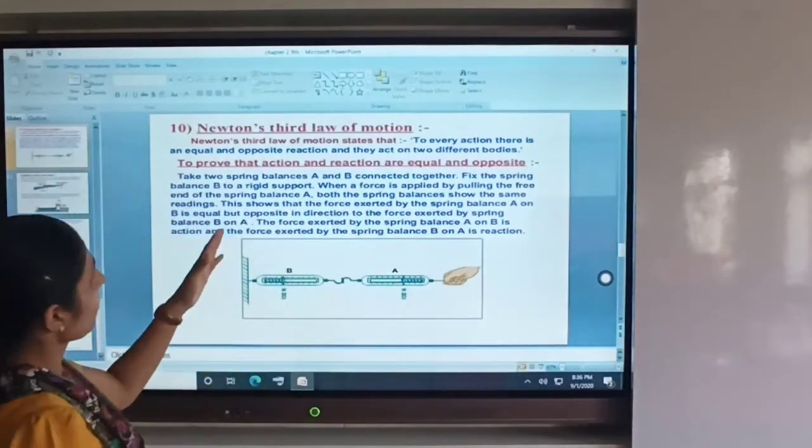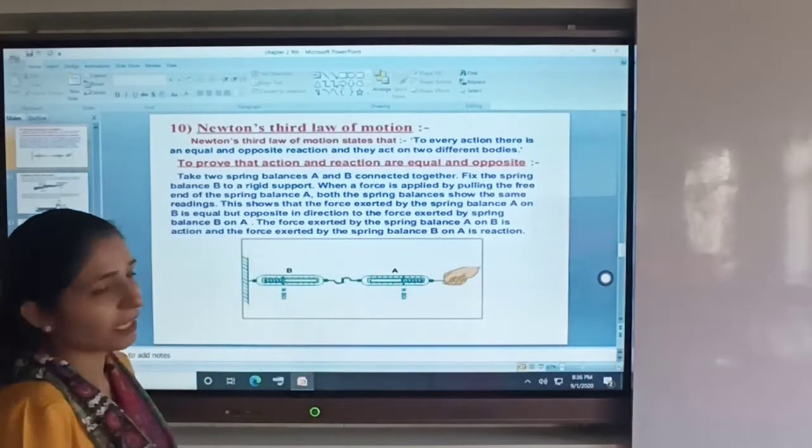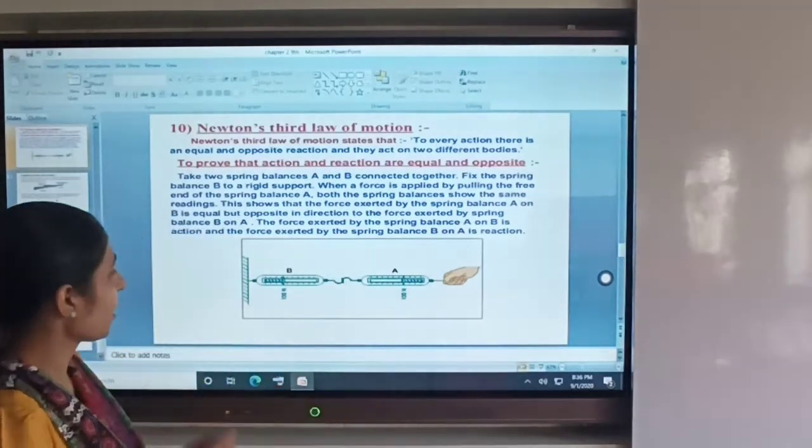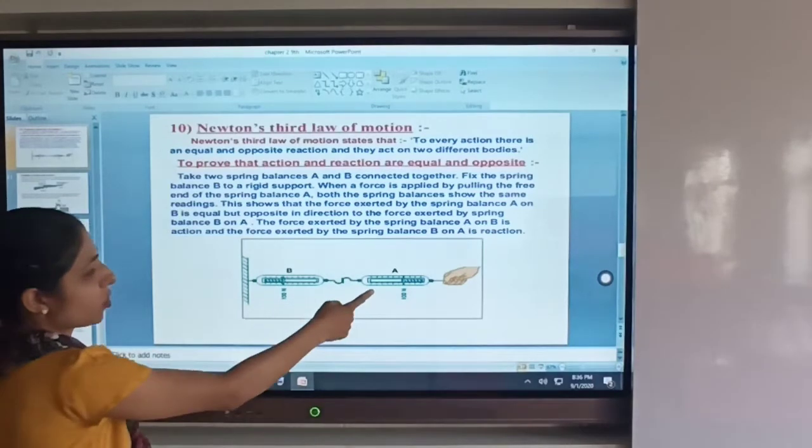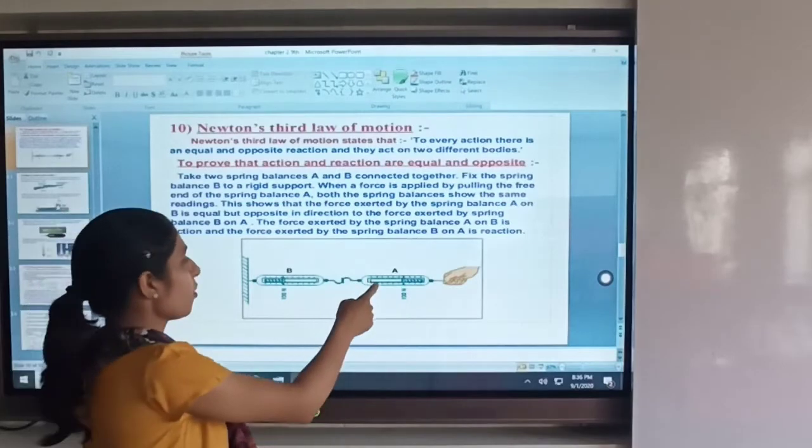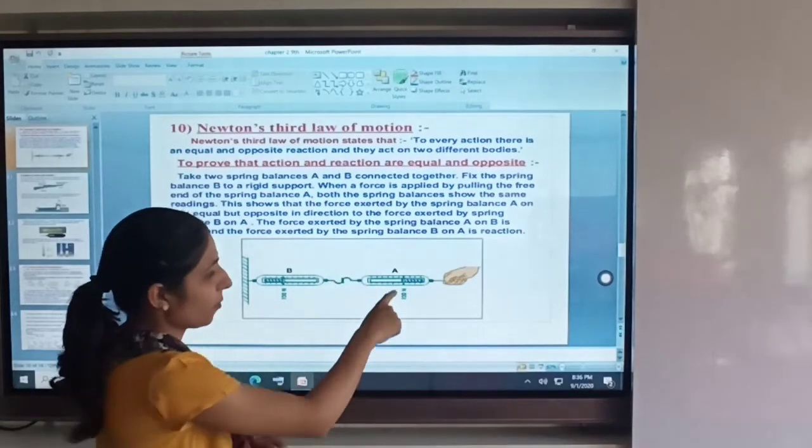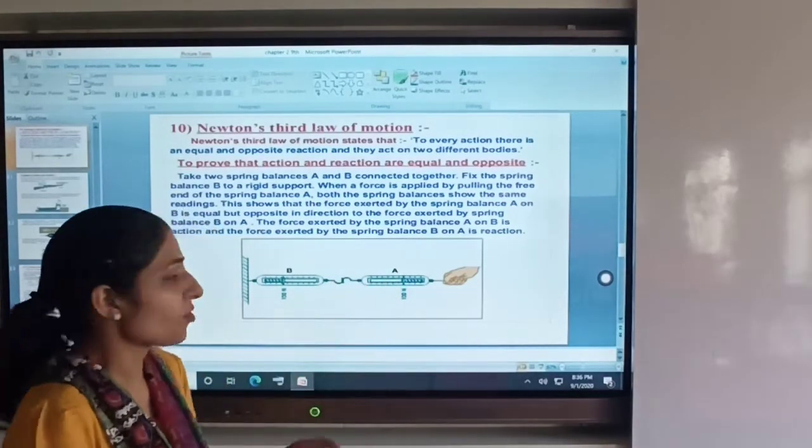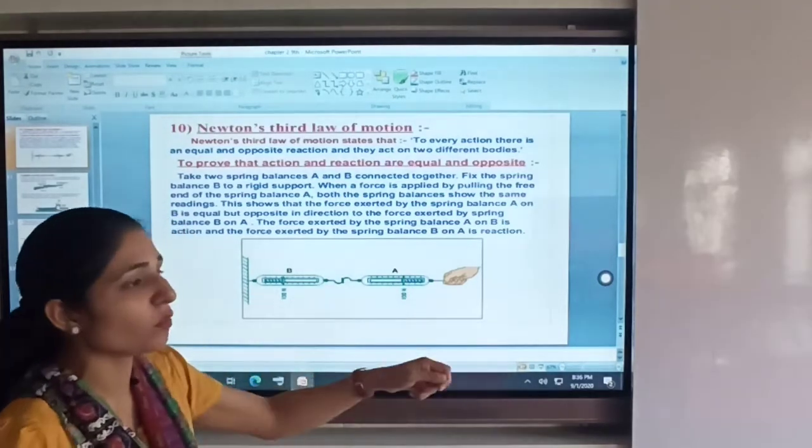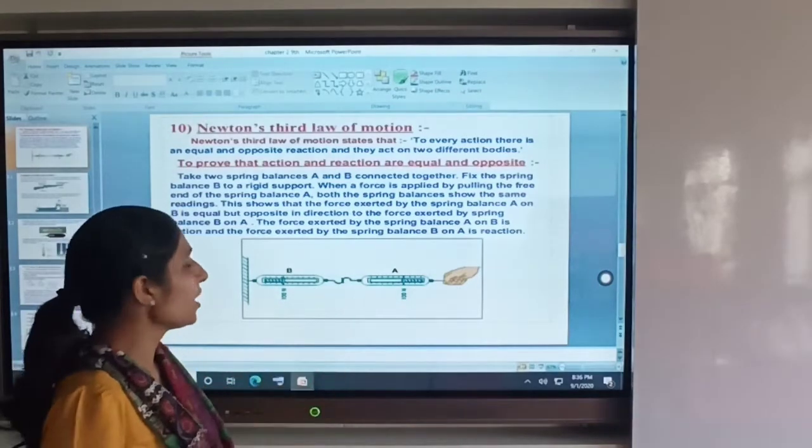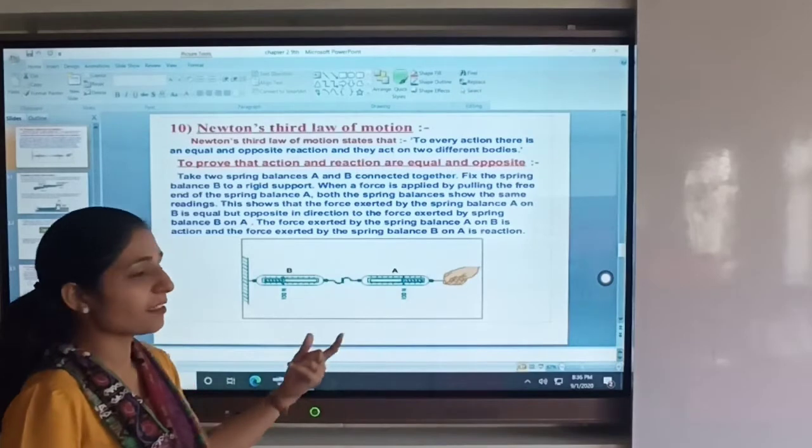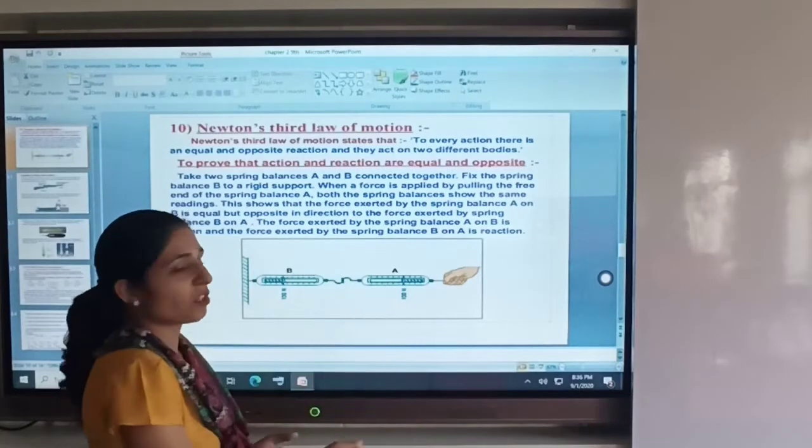Here we have an example on the screen. We have a spring balance with two forces pulling equally, 100 Newtons on each side. When we stretch this, the force acts equally in both directions.